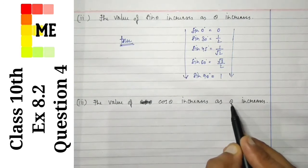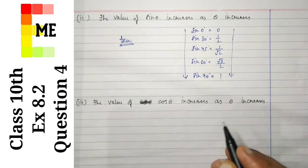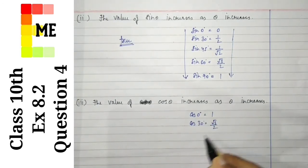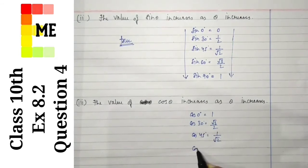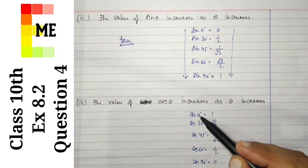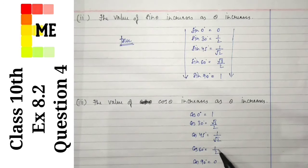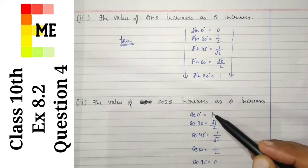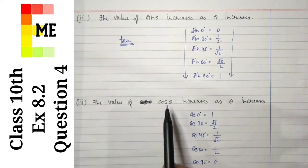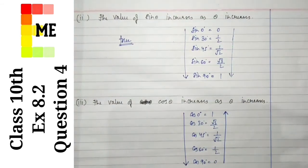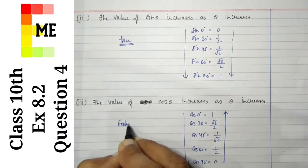Now, the value of cos θ increases as θ increases — let's check if this is correct or wrong. Cos 0° = 1, cos 30° = √3/2, cos 45° = 1/√2, cos 60° = 1/2, and cos 90° = 0. As you can see, the value of θ is increasing from 0 to 90°, but the value of cos θ is decreasing from 1 to 0. So the statement that cos θ increases as θ increases is wrong — theta is increasing but the value is decreasing. They are not proportional. The statement is false.